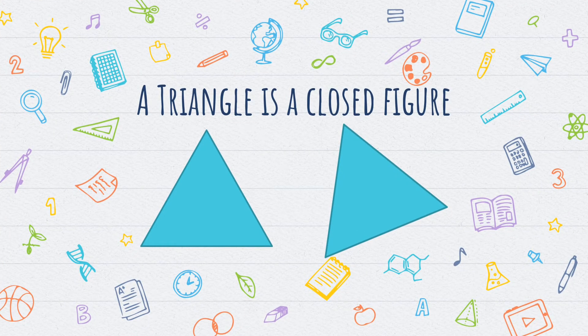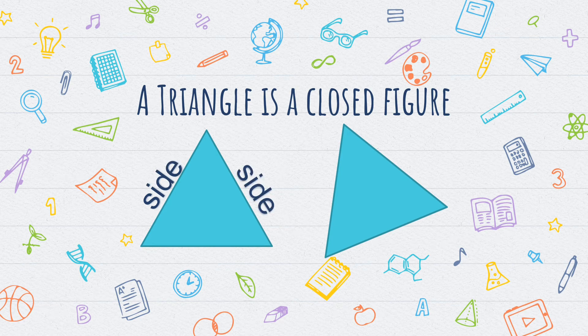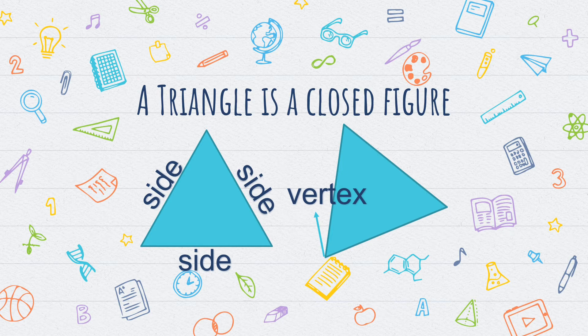A triangle is a closed figure that has three sides. And this is called the vertex. And the plural of vertex is vertices. So how many vertices does a triangle have? Yes, three. So a triangle is a closed figure that has three sides and three vertices.